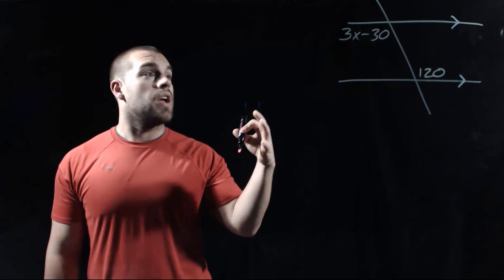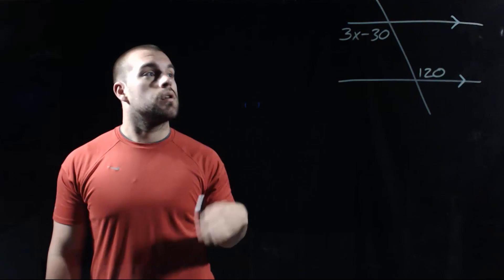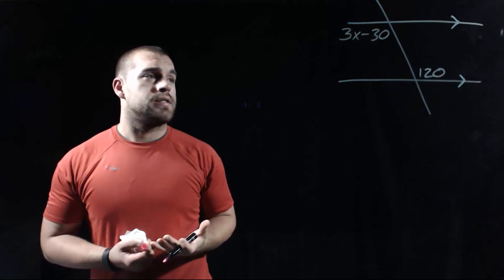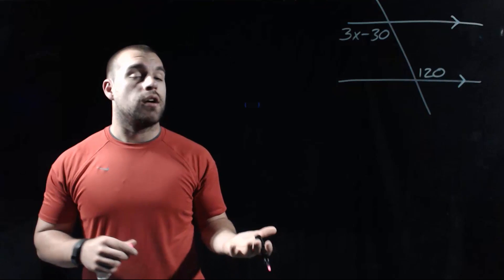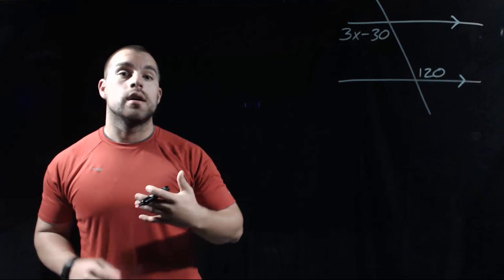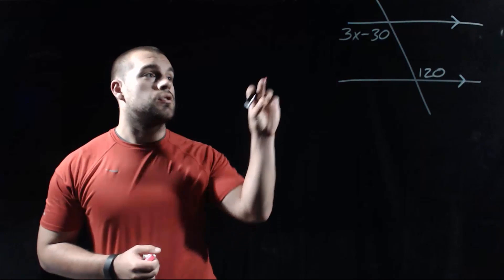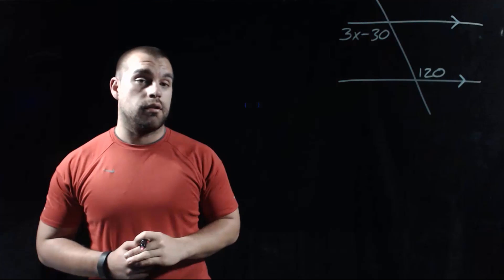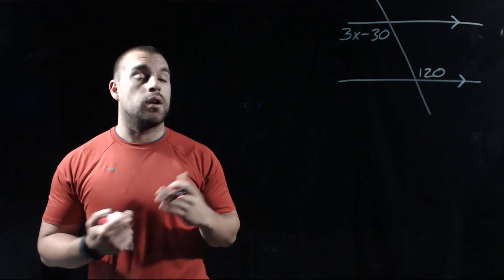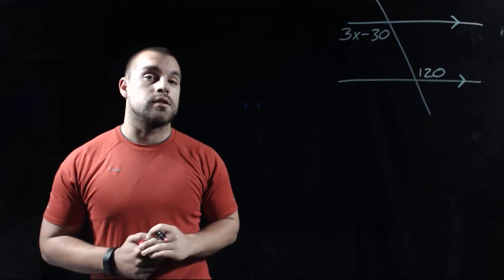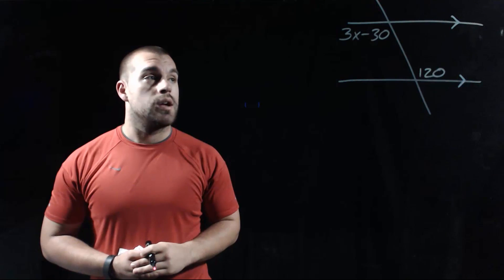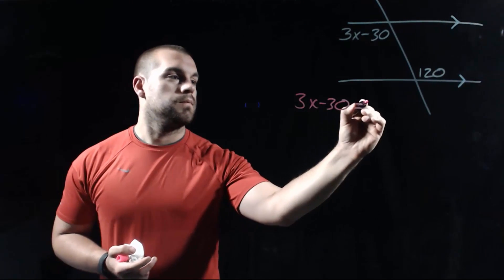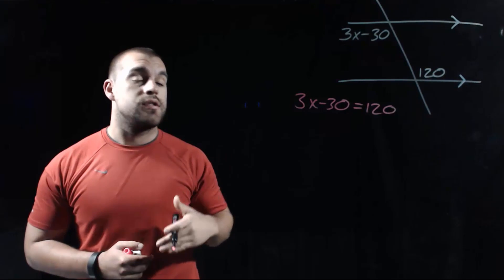So let's take a look at this example. We've got two parallel lines, and we're looking at the measure of two of those angles. Over here we've got 3x minus 30, and down here we've got 120. First thing we're going to decide is what kind of angle pair this is. These are two angles that are between those two parallel lines and on opposite sides of the transversal, so these are alternate interior angles. The relationship between alternate interior angles when our two original lines are parallel is that those two angles are congruent, meaning their measures are equal. So we can set up an equation that says 3x minus 30 equals 120.